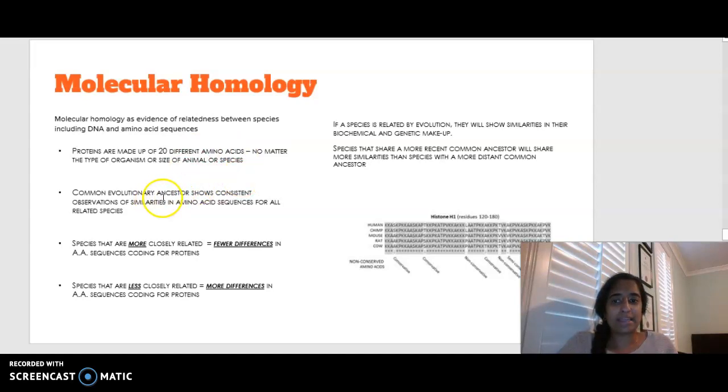We can see that there is a common evolutionary ancestor when there is consistent observations and similarities of amino acid sequences. So if an amino acid sequence is similar for two particular animals, we can suggest that they have or share a common ancestor. Species that are more closely related are going to have less differences in their amino acid sequence that's coding for that particular protein.